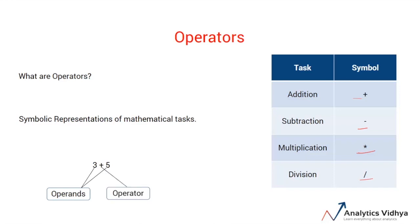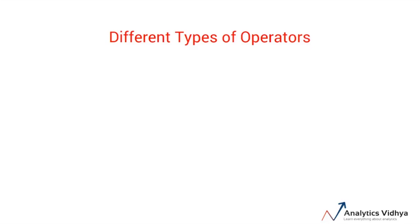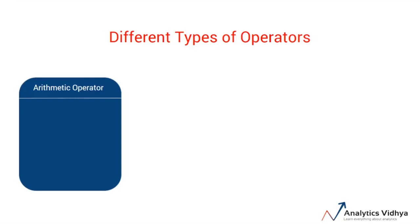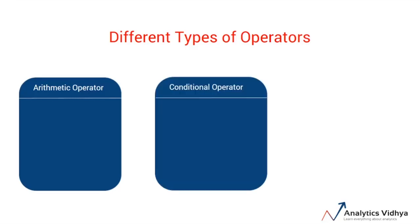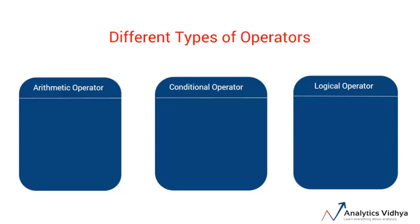There are different kinds of operators. Operators can be mainly divided into three categories. First, the arithmetic operators. Second, the comparison operators. And third, the logical operators. Let's see each of them in detail.